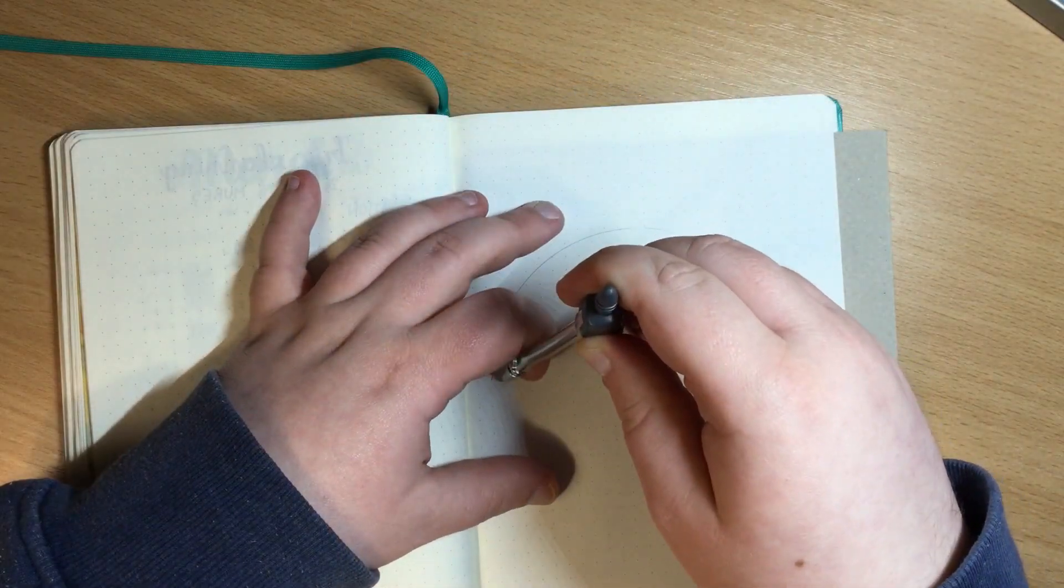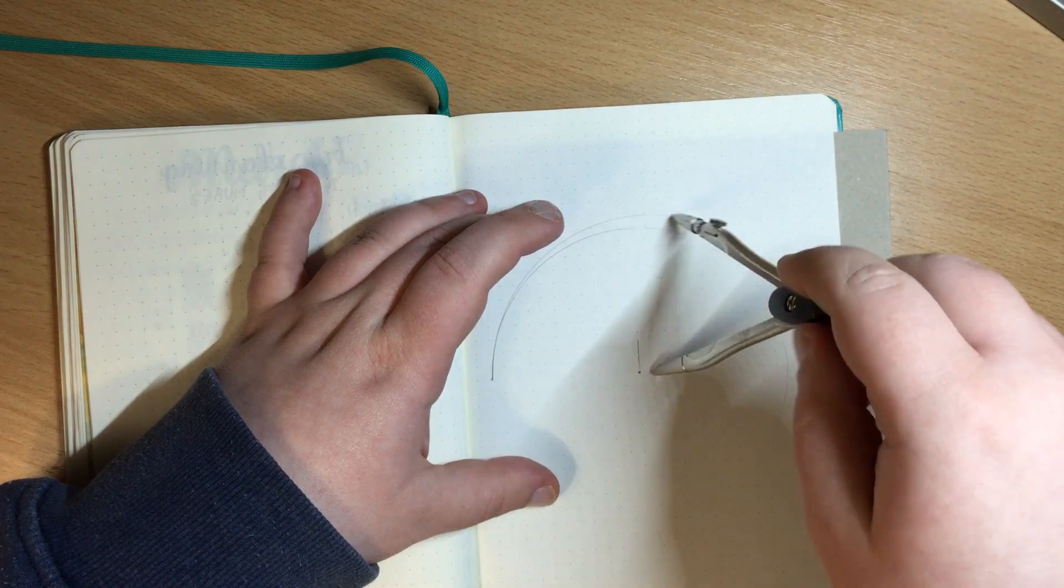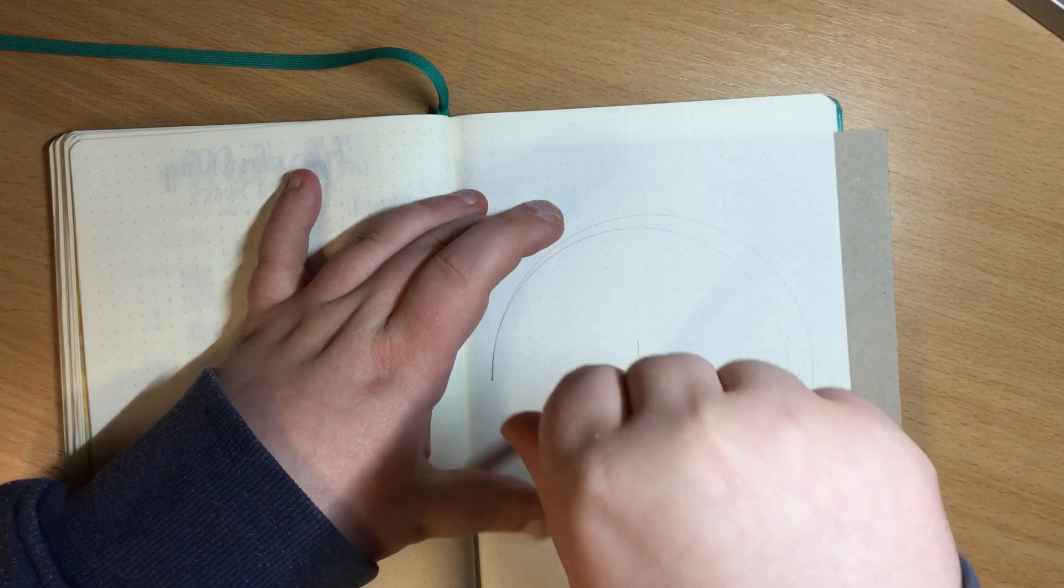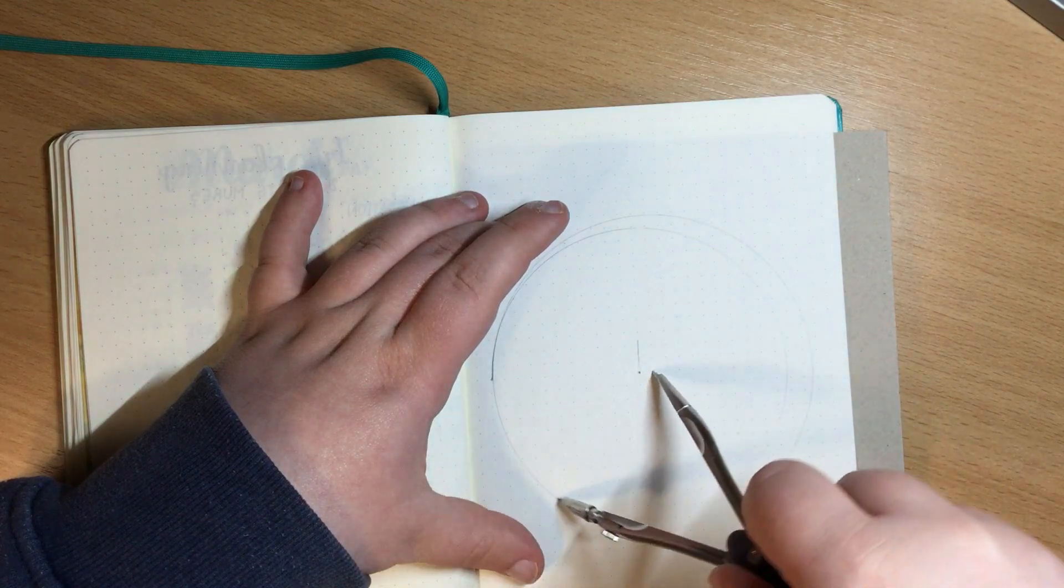First I'm doing the welcome page for the month of April. I'm using a compass to draw out a circle. Underneath this page I put a piece of chipboard just so I don't puncture too many layers.